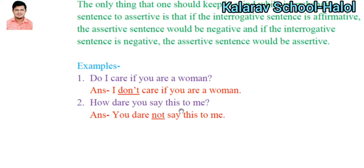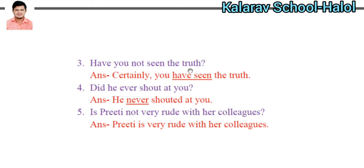'How dare you say this to me?' This is an affirmative interrogative sentence, so transforming it into the assertive gives a negative sentence: 'You dare not say this to me.' with a full stop. 'Have you not seen the truth?' Here 'not' is present, so the sentence is negative; therefore it will be transformed into affirmative: 'Certainly, you have seen the truth.'